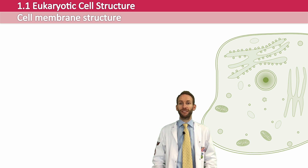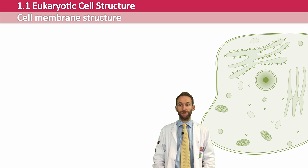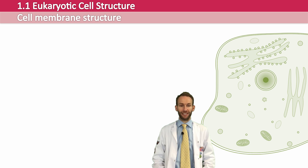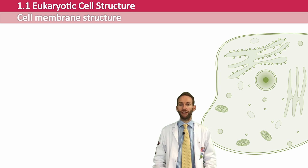The membranes of all cells have many important functions. There are also membranes that surround many of the organelles within cells. All these membranes have the same basic components to their structure that allow them to carry out all these different functions. In this section, we'll look at this structure and how it defines these various functions.